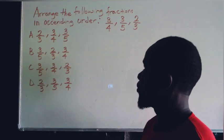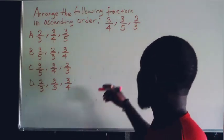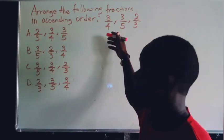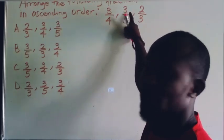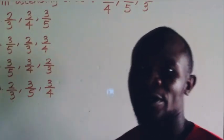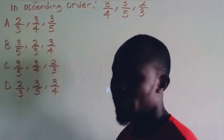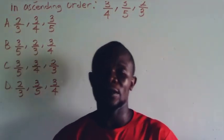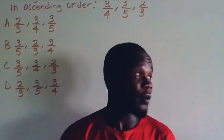We are going to arrange the following fractions in ascending order: 3/4, 3/5, 2/3. These are the options here. I want you to be very attentive as I show you the solution. Please don't forget to share and subscribe to my channel.